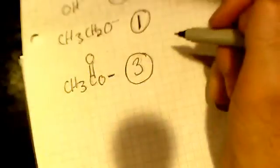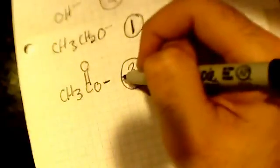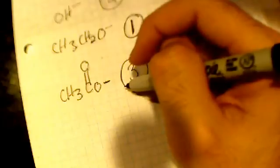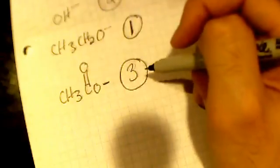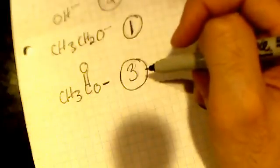And acetate is going to be three, because the acetate ion's conjugate acid is acetic acid, which is the most acidic. So that means this is the weakest base, and therefore the less strong nucleophile.